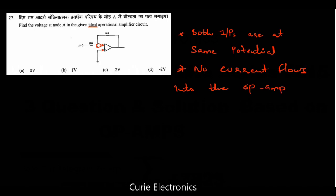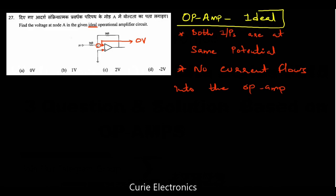The positive input, that is the non-inverting input, is connected to ground. So node A is also at zero volts. This is applicable when the op-amp is ideal. If the op-amp is ideal, both input terminals are at the same potential and there is no current flowing into the inputs of the op-amp. So the answer is zero volts.